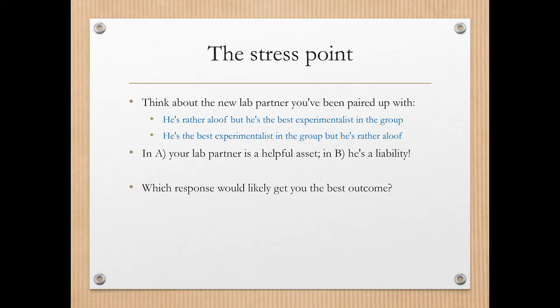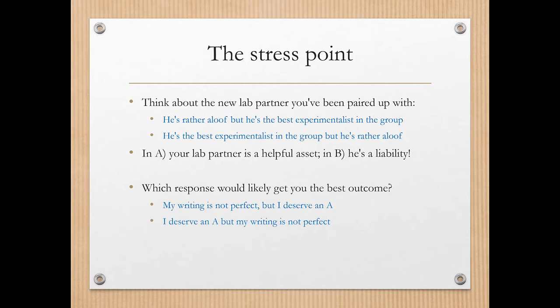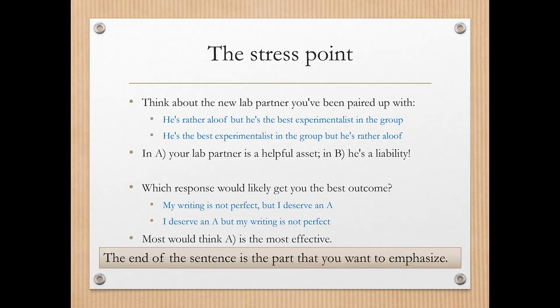If you had done some work and you wanted to ensure you got the highest grade possible, and you go to your professor and make a plea — which response would get you the best outcome? Firstly: 'My writing is not perfect, but I deserve an A.' And the second: 'I deserve an A, but my writing is not perfect.' Most people would think you'd be more likely to get a better outcome if you choose option A and leave the stress point as that you deserve the A, despite the fact that your writing may not be perfect. So the end of the sentence is the part you want to emphasize — think about that as you finish key sentences and certainly as you finish a paragraph.